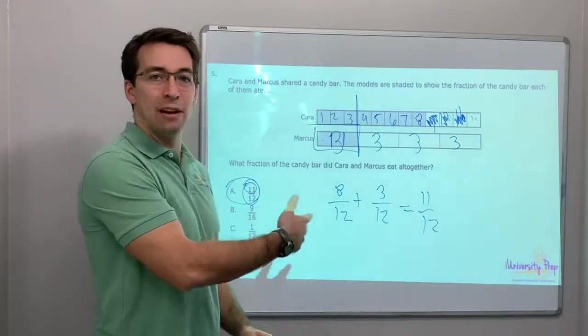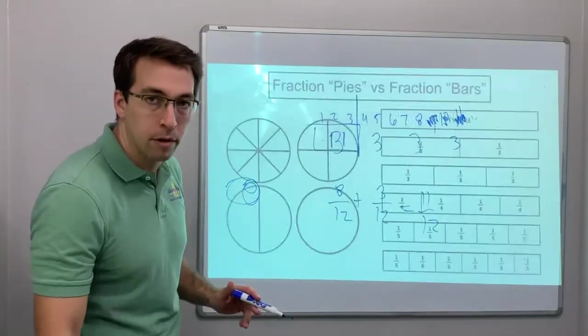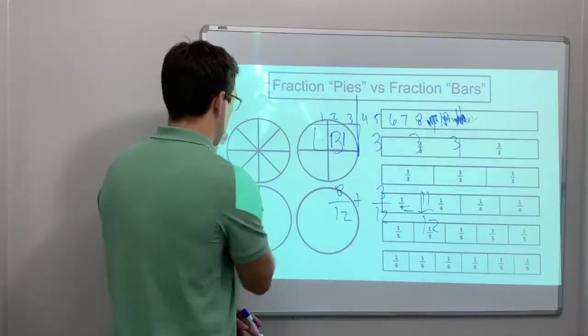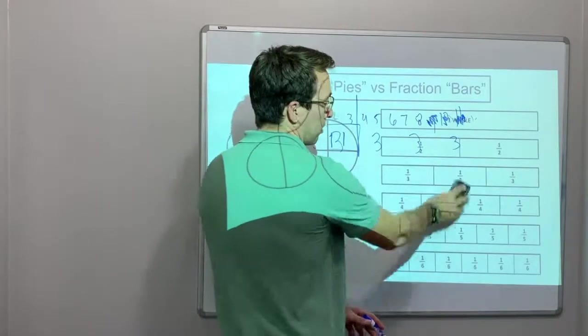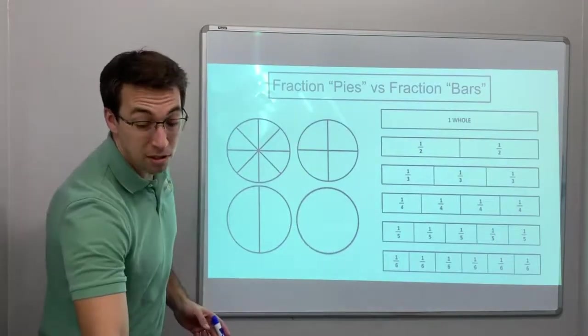So you could have just done it visually and counted, or you could have done it with actually fractions and added them together. It doesn't matter. That's why some people like the visuals and other people don't like the visuals because the pictures confuse them and other people, the numbers confuse them.